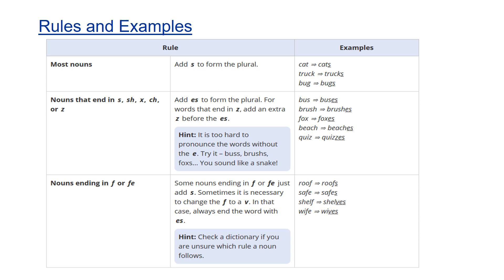Most nouns add S to form the plural. Example: cats, trucks, bucks. However, there are few nouns that end with S, SH, X, CH, or Z. In that case, we use ES as a suffix. Example: buses, brushes, foxes, beaches, quizzes.